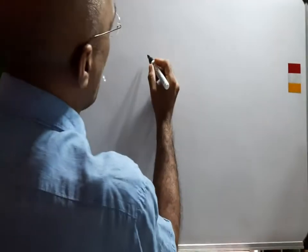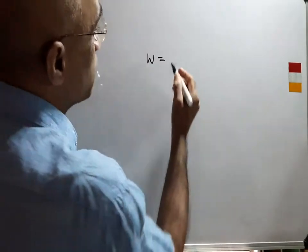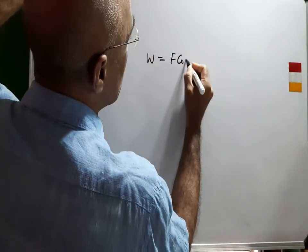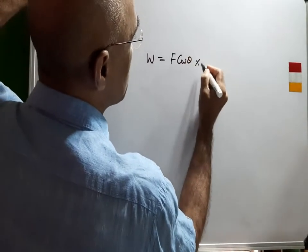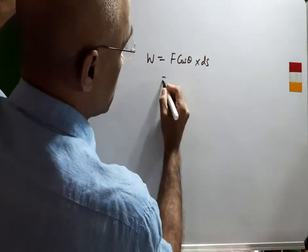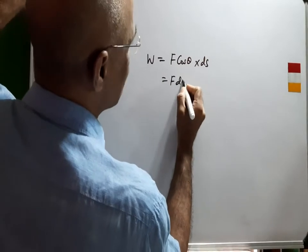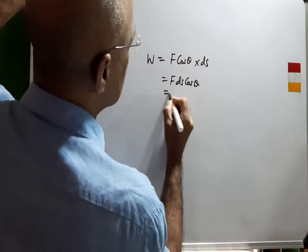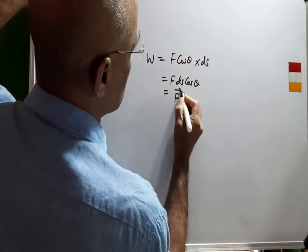So we have that work is nothing but the product of the force component multiplied by the displacement. That is the product of the force component in the direction of displacement multiplied by the displacement. This is F·ds·cos(θ). We can write this as a vector product, that is vector product of force and the displacement ds.